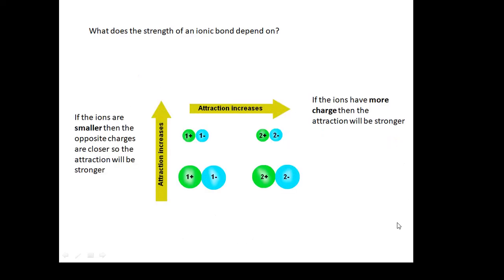Remember, if the ions are smaller, then the opposite charges are closer, so the attraction is stronger. If the ions have more charge, then the force attracting them is stronger, so the bond will be stronger.